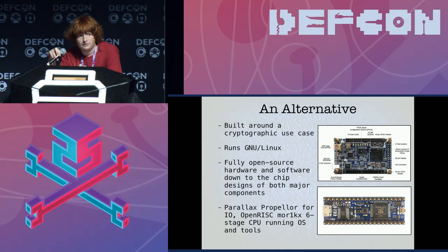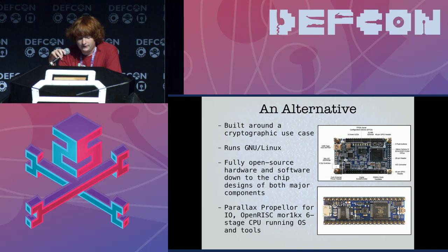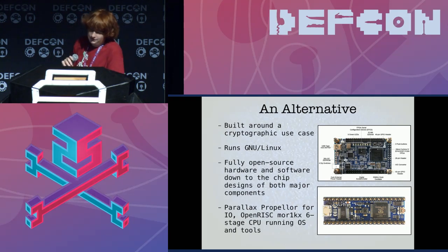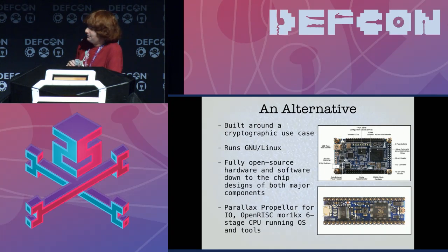And then we have the OpenRISC CPU design — the mor1kx six-stage RISC CPU — running on that FPGA, running the OS and operating systems.